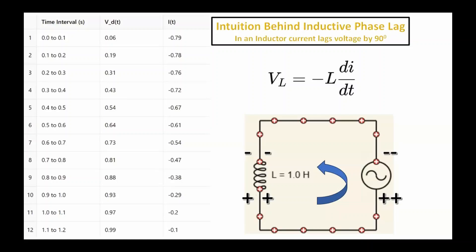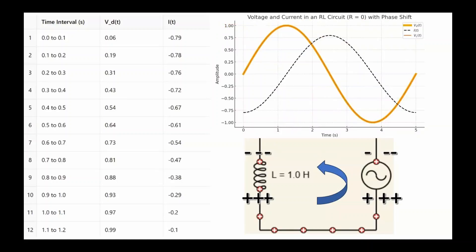Unlike a resistor, which dissipates energy as heat, an inductor stores magnetic energy, allowing current to flow even when its voltage is zero. This process continues as long as the power supply is operating. When the voltage is zero, the current is at a large negative value. As the voltage across the power supply and the inductor increase, the current also increases, but the current is out of phase with the voltage. When the voltage is maximum, the current is not maximum. In an inductor, the current lags the voltage by 90 degrees.